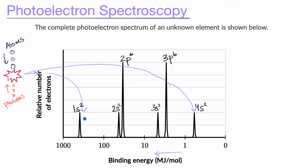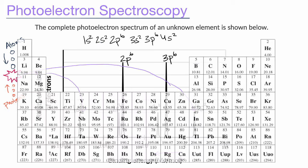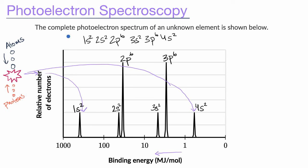Just like that, we're able to use the photoelectron spectrum to come up with the electron configuration of this mystery element: 1s2, 2s2, 2p6, 3s2, 3p6, 4s2. What element has this configuration? Looking at the periodic table: 1s2 gets us to helium, 2s2 2p6 gets us to neon, 3s2 3p6 gets us to argon, and then 4s2 gets us to calcium. So our mystery element is calcium.